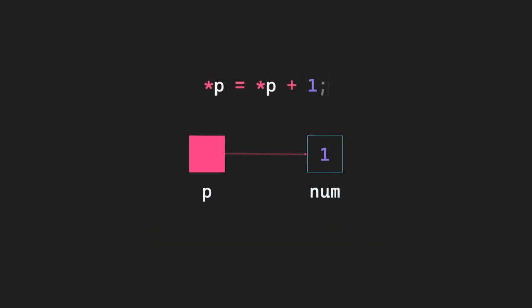What about this statement? This is going to increment the value stored at num by 1. Whenever you dereference a pointer, you're accessing the variable at the address stored in the pointer. So we can replace all star p's with nums, and the statement would still have the same effect.